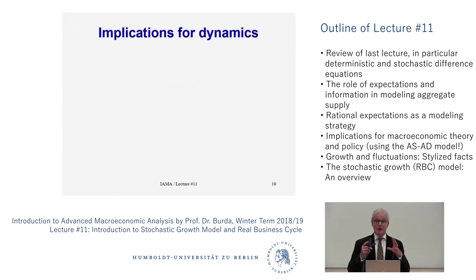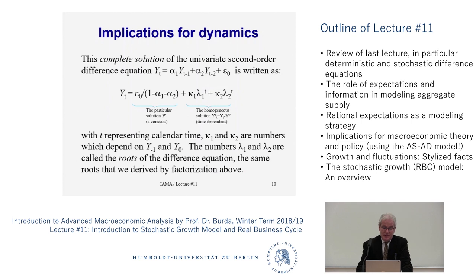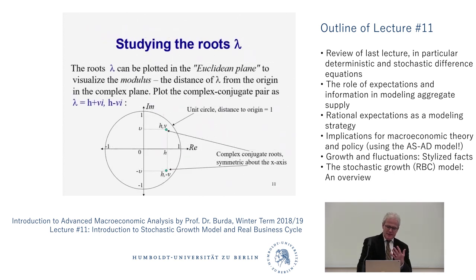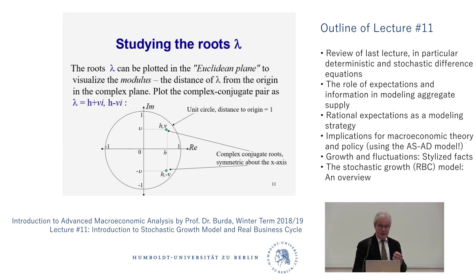The result is a complete solution. Download the slides — very important. The implications of dynamics are interesting: we have the particular solution which is the steady state, and the deviation of y_t from its steady state equals the homogeneous solution. Those roots can be outside or inside the unit circle. If they're outside and complex conjugate, the waves are getting bigger and bigger — like being in a tsunami getting worse and worse. That's not a good model; we don't observe that in reality. We'd like models that converge to the steady state, because that's what we observe in the data.